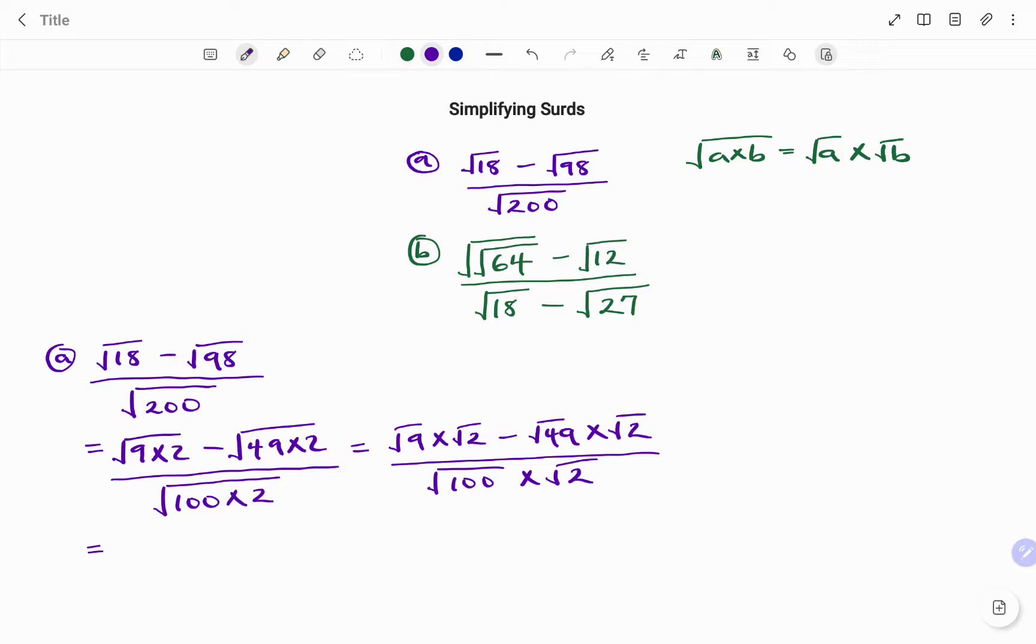So if I simplify what I have, square root of 9, that's 3 times root of 2. I'm going to leave root 2 as it is because 2 is not a perfect square. I have minus root of 49, that's 7 times root 2, divided by root of 100, that's 10 root 2.